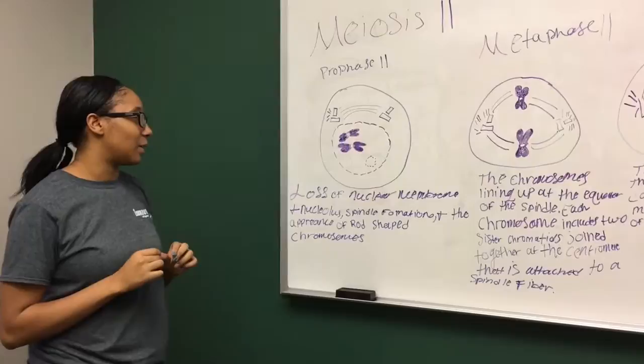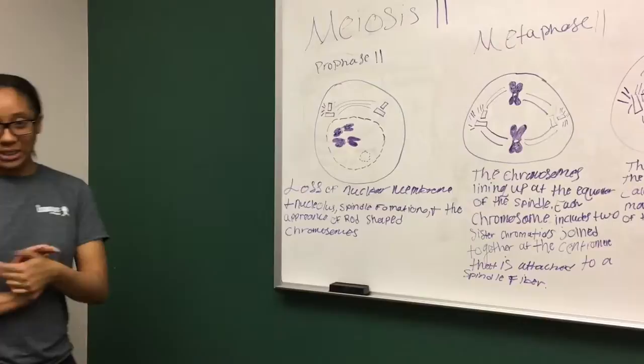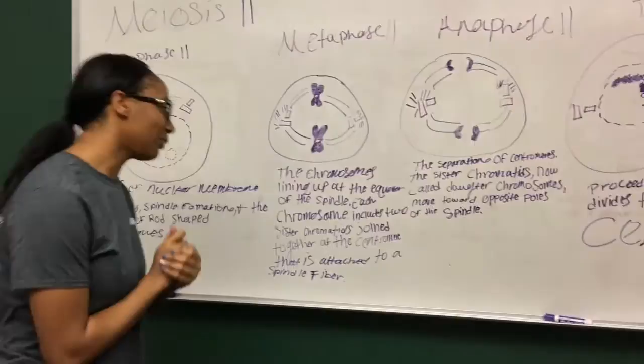So in meiosis II, the beginning stage prophase II, the loss of the nuclear membrane and nucleolus spindle formation, and the appearance of rod-shaped chromosomes appear. So for example, let's take two groups of friends, or two friends. And everything's going good, everybody's having a great time.